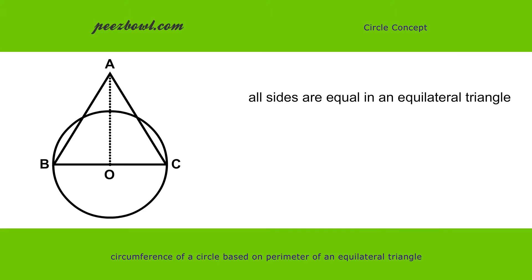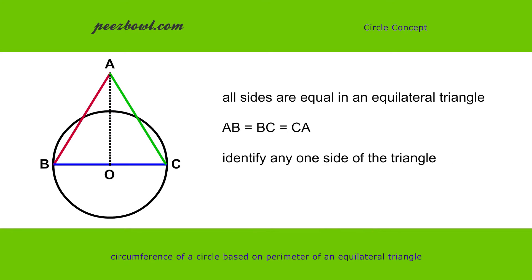As we know that all sides are equal in an equilateral triangle, so we have AB equals BC equals CA. If we can identify any one side of the triangle, then we have identified the diameter BC of the circle.